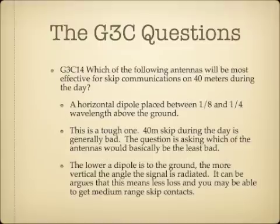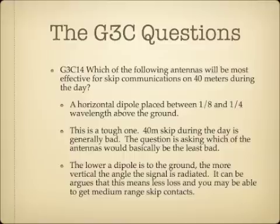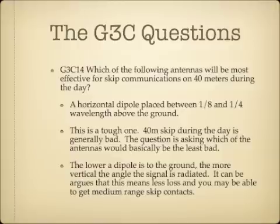Which of the following antennas will be most effective for skip communications on 40 meters during the day? The answer is a horizontal dipole placed between 1/8 and 1/4 wavelength above the ground. 40-meter skip during the day is generally poor, so it's really a question of which option is least bad. The lower a dipole is to the ground, the more vertical the angle the signal is radiated, meaning less loss and better medium-range skip contacts.